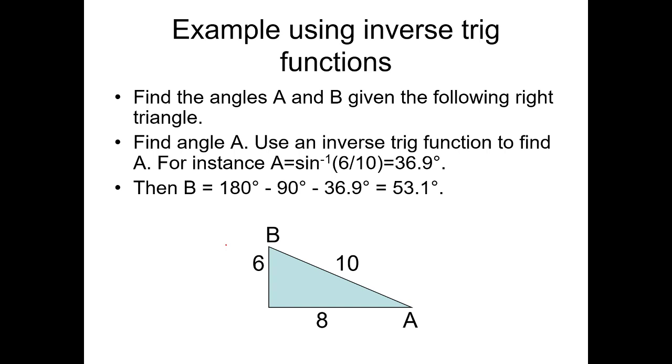Find the angles A and B given the following right triangle. To find angle A, we need to use an inverse trigonometric function. For instance, A is equal to arc sine 6 over 10. In your calculator, just press shift and then sine. Then put 6 over 10. Remember to have your calculators in degree form, not in radian form. Therefore, you will have 36.9 degrees.